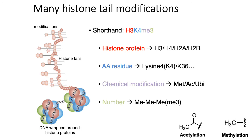In the name H3K4ME3: H3 tells you which histone protein in the nucleosome is being modified. K4 tells you which amino acid is being modified — in this case, the fourth lysine. ME tells you the chemical modification, so ME stands for methylation, AC for acetylation, and UBE for ubiquitination. The three tells you that three methyl groups are being added — trimethylation. With acetylation, you can only have one acetyl group, so there's no number for acetylation modifications.